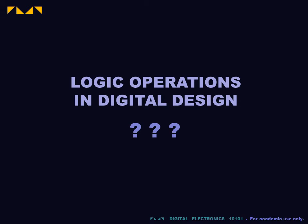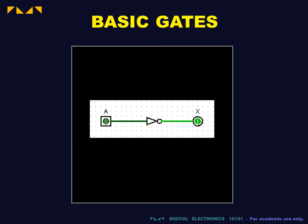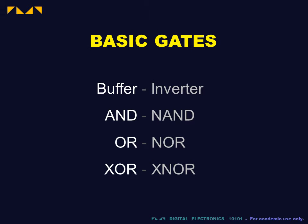We will now address the implementation of logic operations in digital design. In digital design, we think of logic operators as circuit devices linked by wires. The devices that correspond to the fundamental logic operations are known as basic gates. These are the four basic gates along with their inverses.